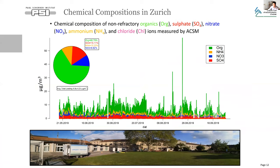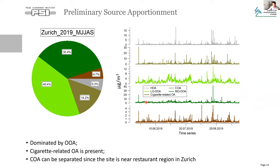In addition to the Athens data, we have tested the automation procedure using ACSM data collected in Zurich. It is an urban background site located in a park, and the data is collected from May 2019 to May 2020. As you can see from the pie chart, OOA is still dominating with around 65.8 percent contribution. Before running the real-time source apportionment, we analyzed the seasonal results to better understand the number of factors. Here we were able to identify HOA, COA, and a cigarette smoke OA factor in this dataset.